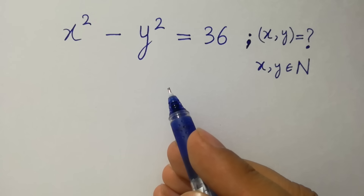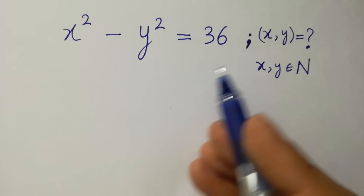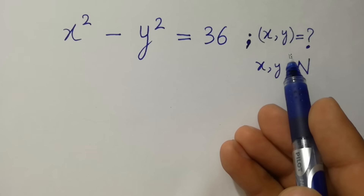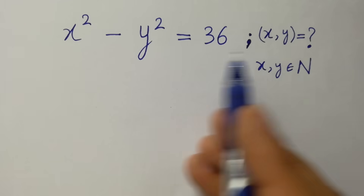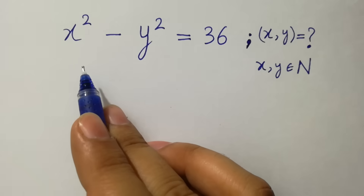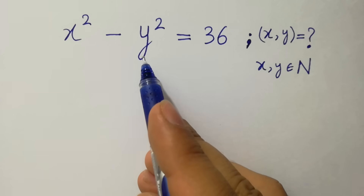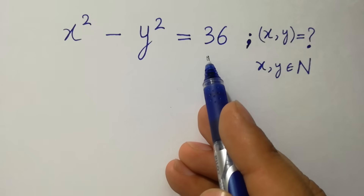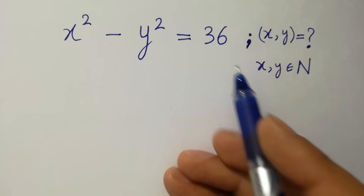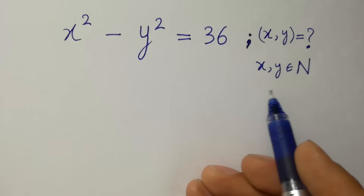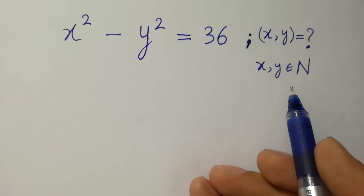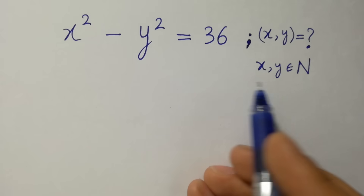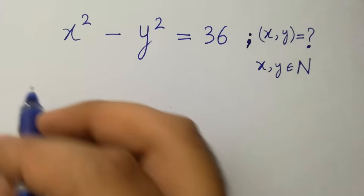Hello friends, find the value of x and y if x squared minus y squared equals 36, where x and y belong to natural numbers. Let's have a solution.